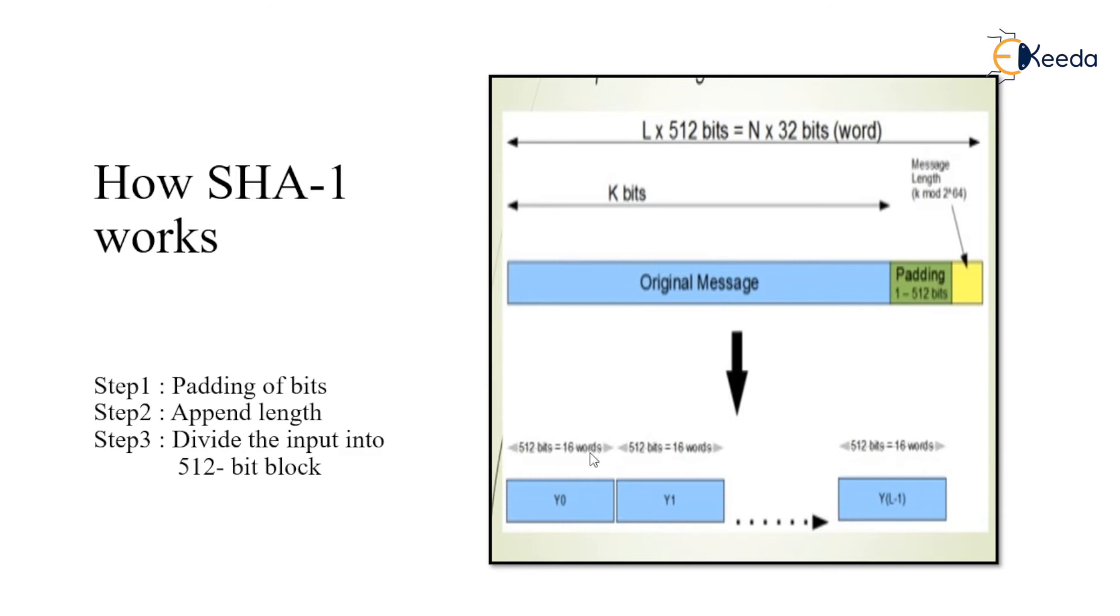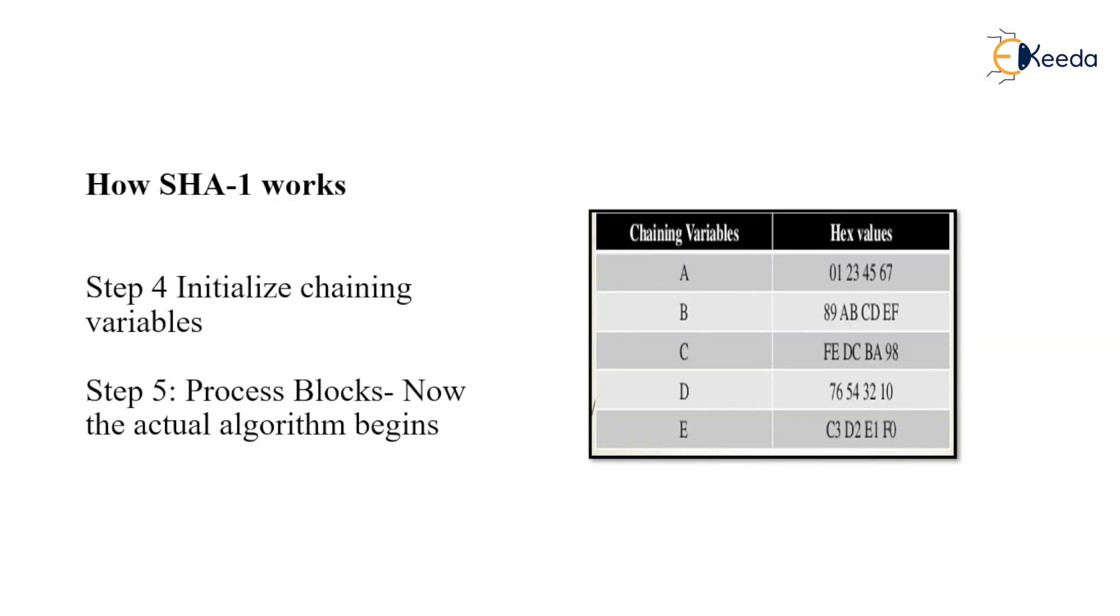Step 4 is initialize the chaining variables. Here the chaining variables are initialized with their corresponding hexadecimal values. For A this is the hex value, for B, for C, for D, and for E.